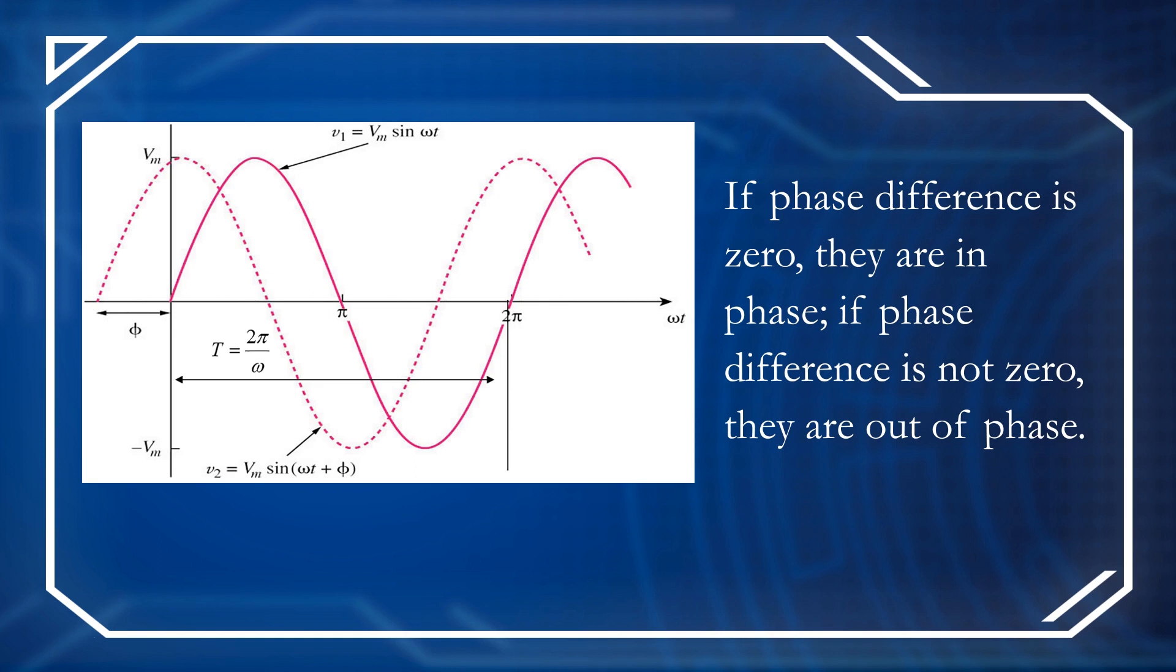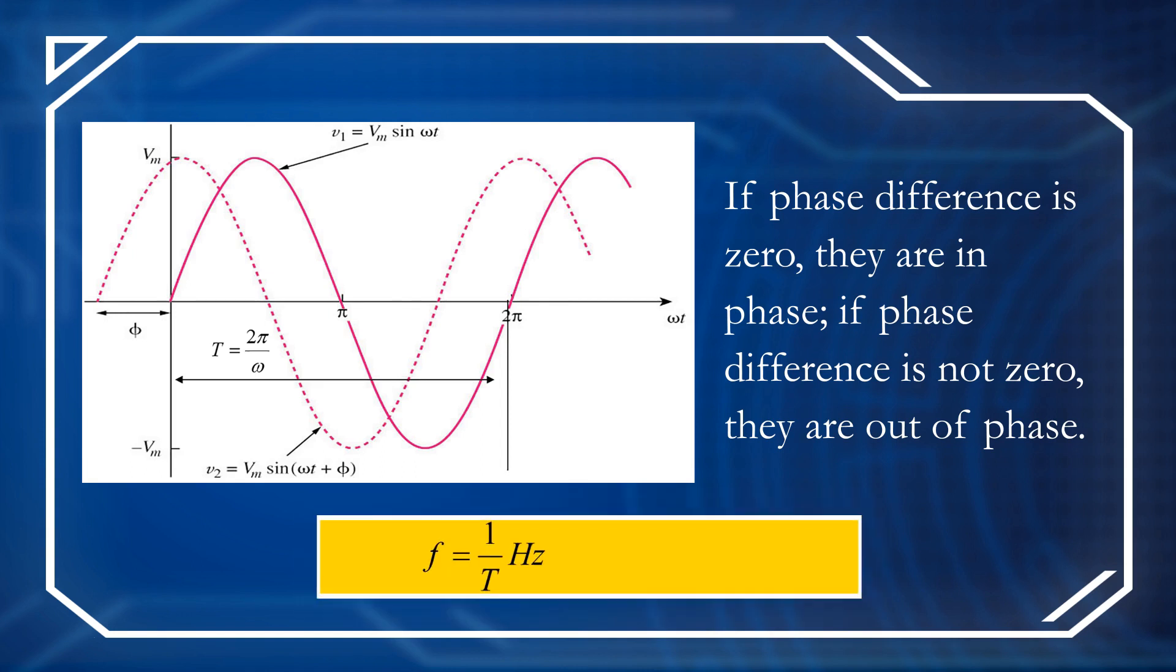And you should know the frequency of a sinusoid, f, equals the reciprocal of the period T. And the unit of frequency is hertz. And then we can get another relationship: ω equals 2π multiplied by f.